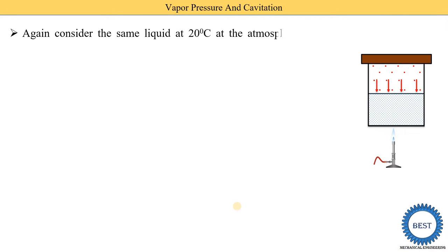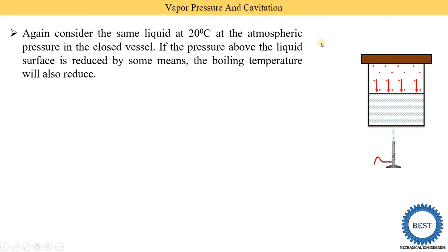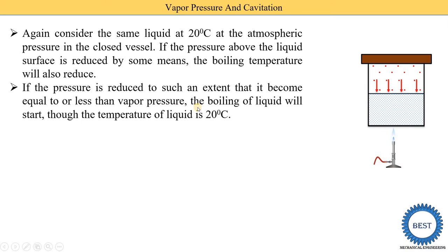Now consider the same liquid at 20 degrees Celsius at atmospheric pressure in a closed vessel. If we reduce the pressure above the liquid surface — by creating a vacuum or some other means — the boiling temperature will also reduce. If the pressure is reduced to such an extent that it becomes equal to or less than the vapor pressure, the boiling of liquid will start even though the temperature is only 20 degrees Celsius.